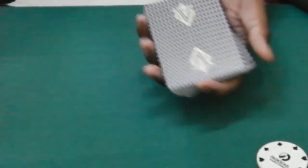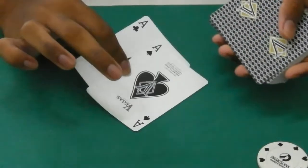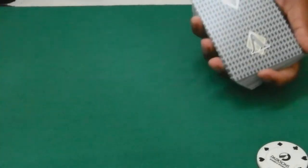Great. So you can do whatever false shuffles you would like. Now, two black aces are right here on top. Two of any cards you would like, actually.